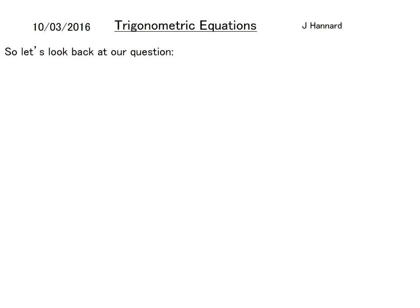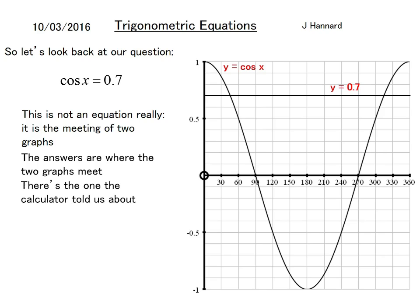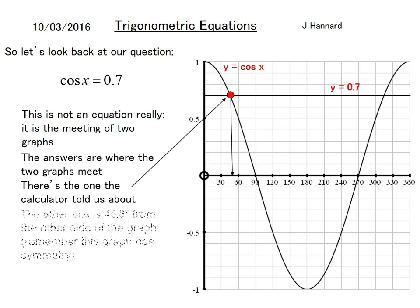Let's look back at that question: cos x equals 0.7. It's not an equation really, it's the meeting of two graphs. If we go back, the way intersection of graphs meet when the algebra is equal to each other. So it's really the meeting of y equals cos x and y equals 0.7.